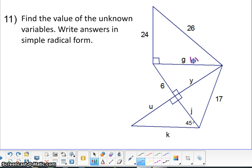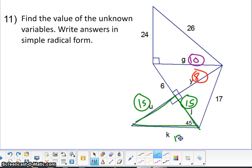By using another triple, I know that Y is going to be 8. And the third triple we're going to have to use, J, is going to be 15. And then our special right triangle is right here. So U also has to be 15, leaving K to be 15 radical 2.